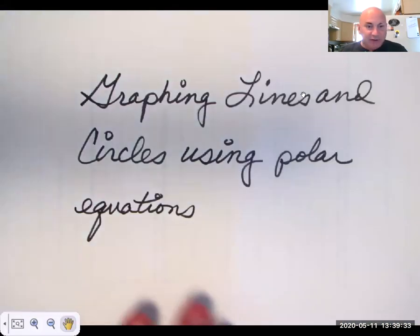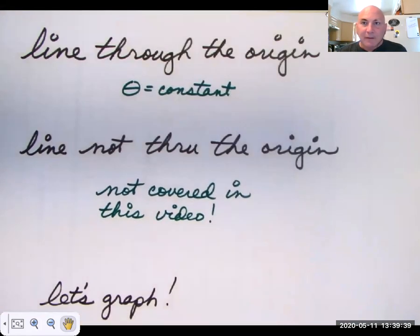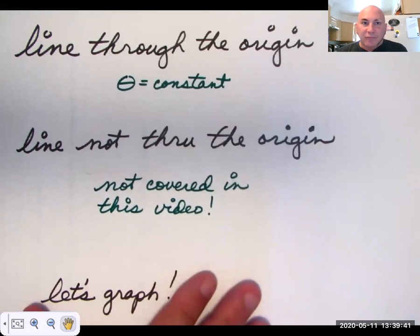So, lines and circles in polar equations. A line through the origin has the equation theta equals a constant. Angle theta, because our polar equations are in R and theta. Theta is a constant. There are some lines that do not go through the origin, obviously. We're not going to cover those in this video.